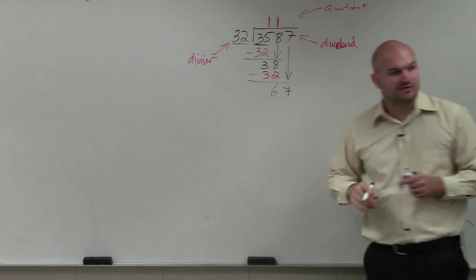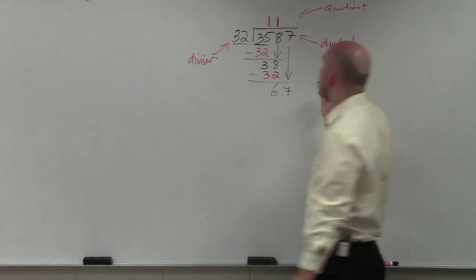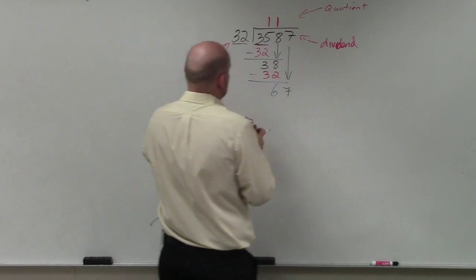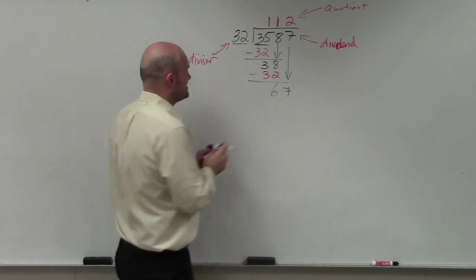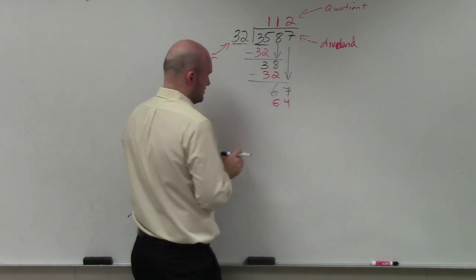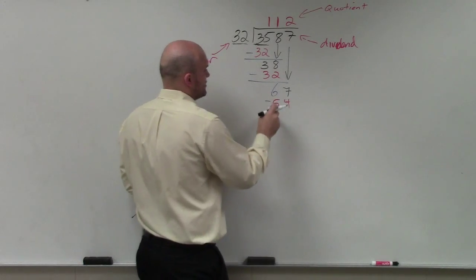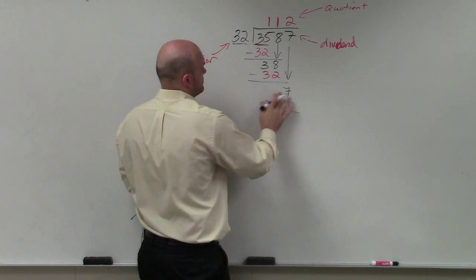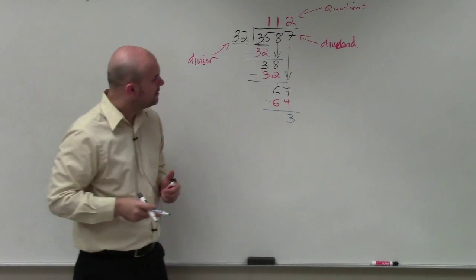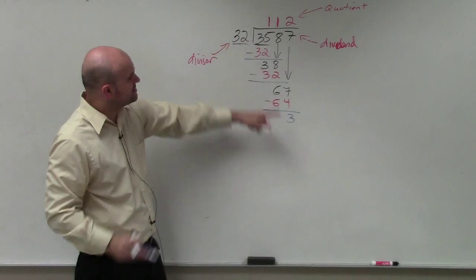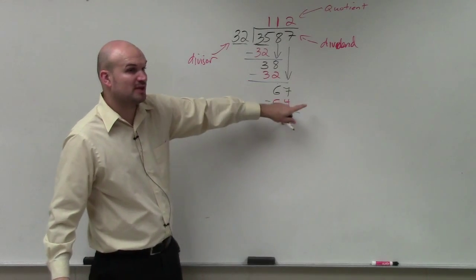Does 32 divide into 67? Yes, divides in there two times. 2 times 32 is going to give me 64. Then again I subtract the rows, and that gives me a 3. Then 32 does not divide into 3, and there's no other place values.